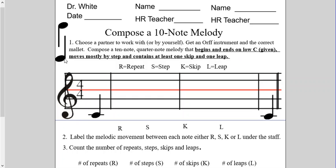Let me get my instrument. We're going to start on low C, and I think I'd like a melody — let me see if I can come up with eight notes. Okay, I like the way that sounds. I'm going to put my notes down.